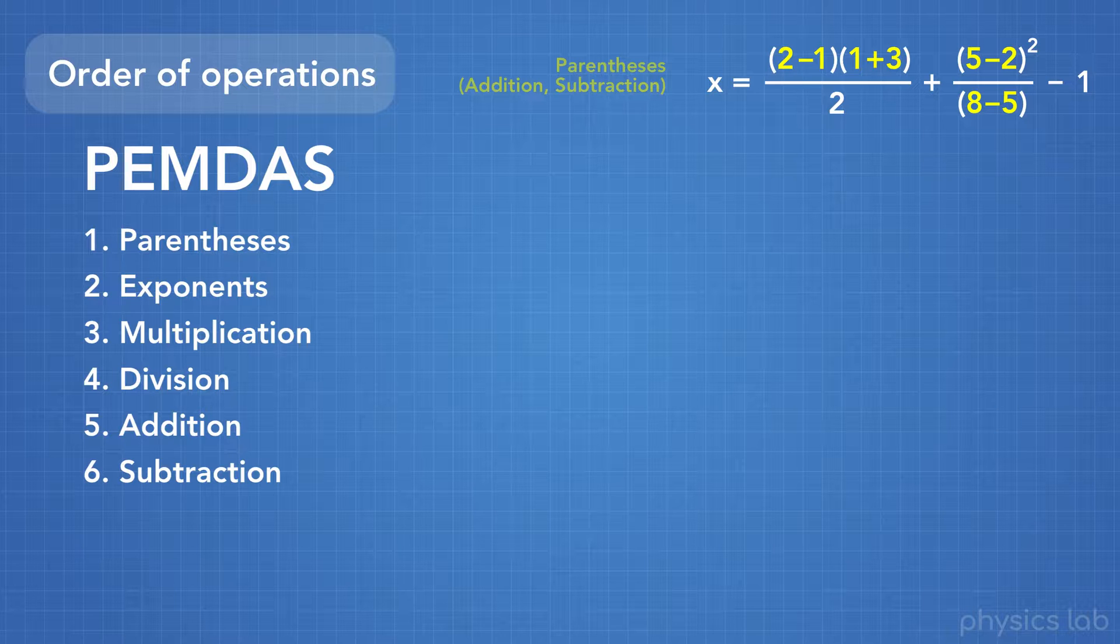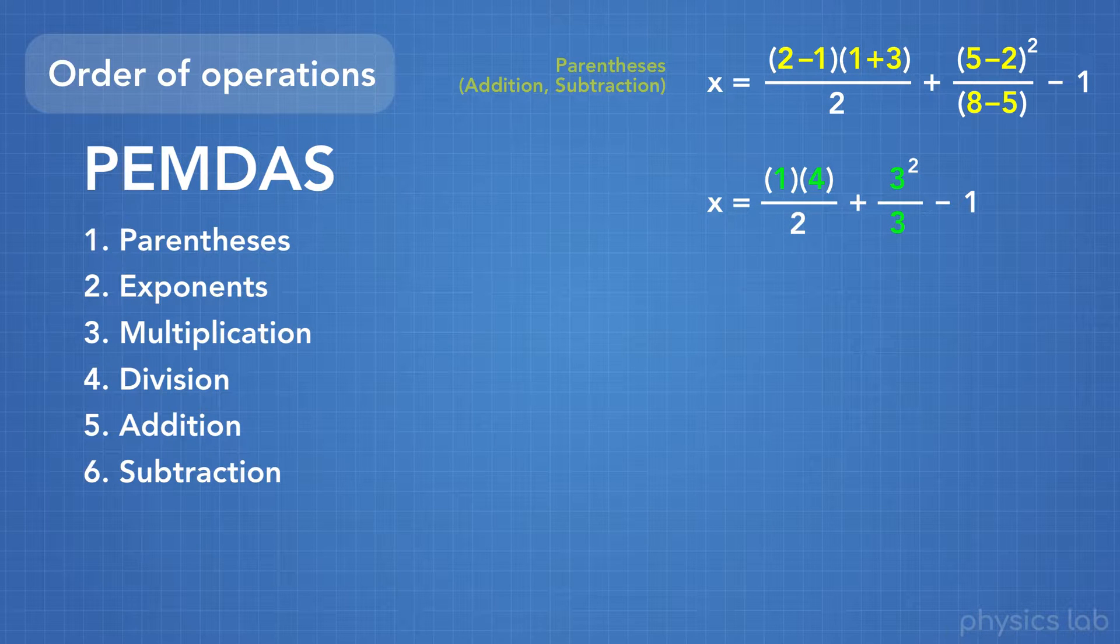2 minus 1 becomes 1. 1 plus 3 becomes 4. 5 minus 2 becomes 3. And 8 minus 5 becomes 3.